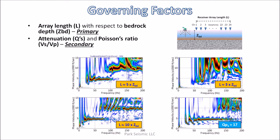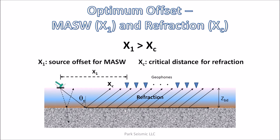The secondary factors are attenuation property of soil and Poisson's ratio of bedrock. The less attenuating the soil is, and the higher the Poisson's ratio of bedrock, the stronger the two horizontal energy trends become. Now let's consider optimum offset conditions of MASW and refraction surveys to see how each condition is favorable or unfavorable to each other.